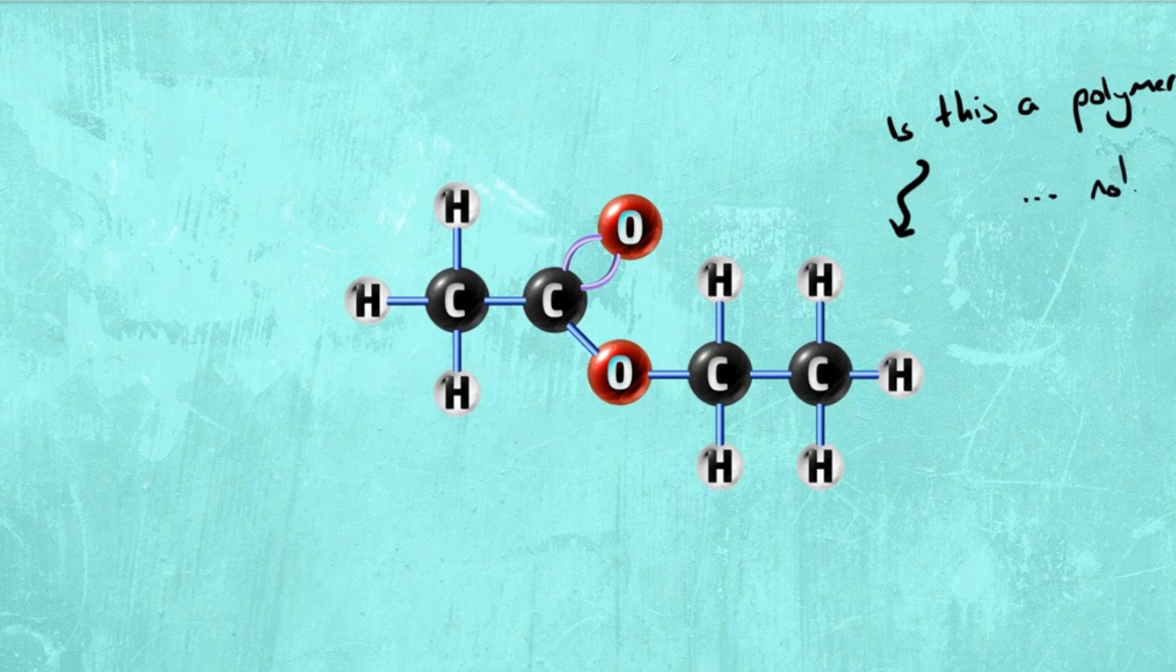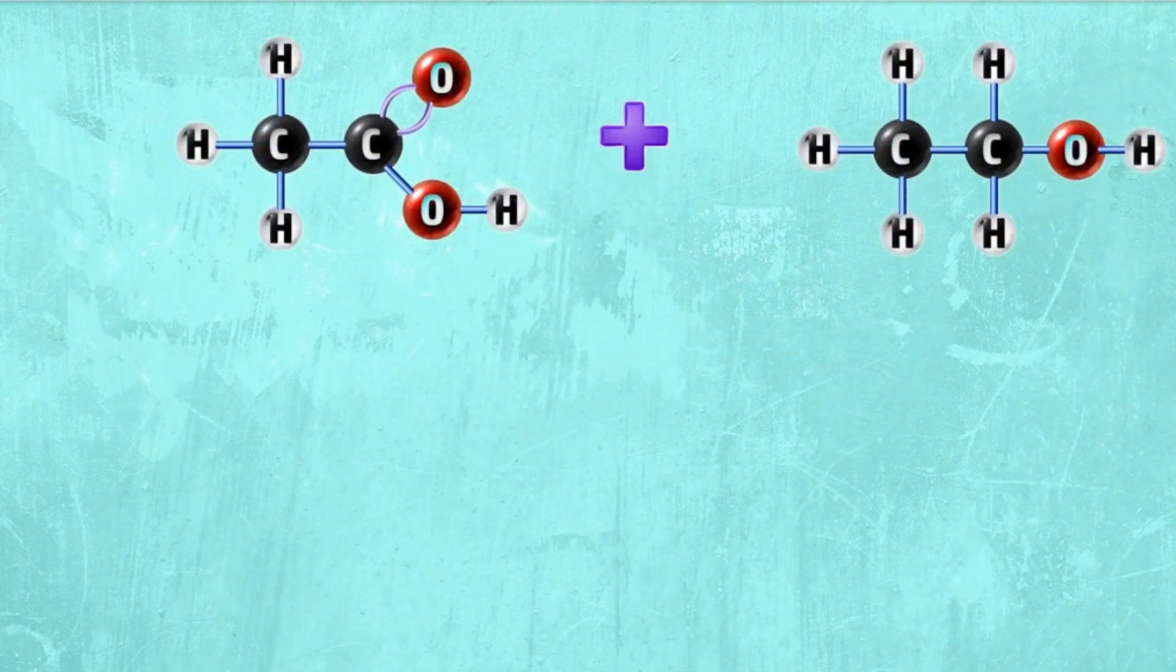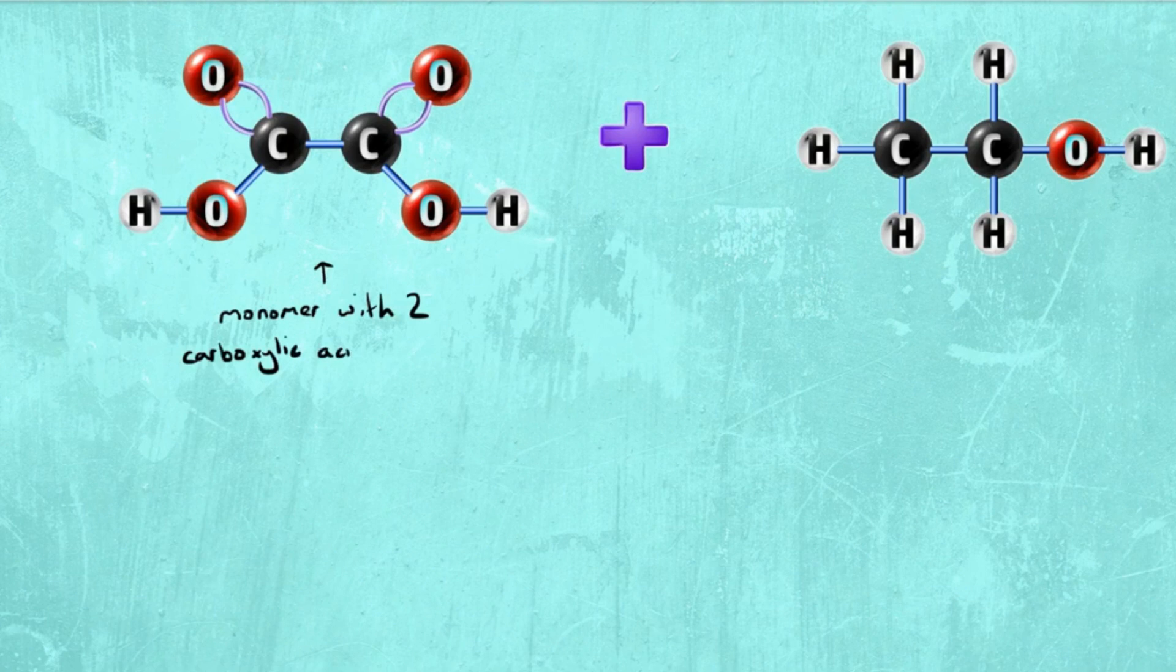So when we look at drawing the actual polymer, what you will have is two functional groups on each of your reactants. Ethanoic acid monomers will have two carboxylic acid groups and ethanol monomers will have two alcohol groups.